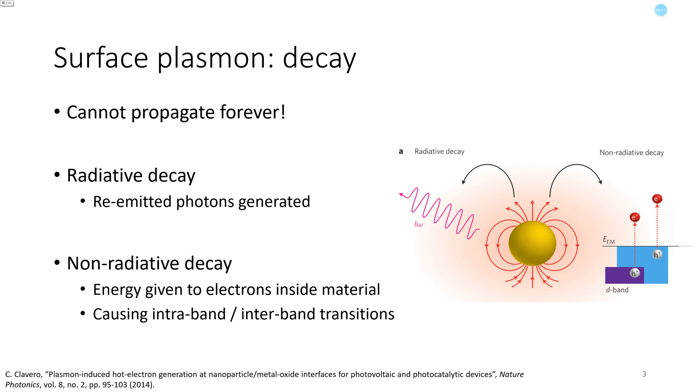However, surface plasmon cannot propagate along the surface for arbitrary length. It still suffers from decay. The decaying effects can be classified in two classes.